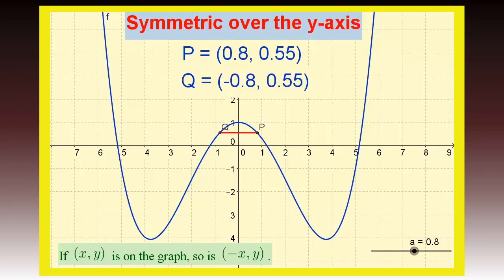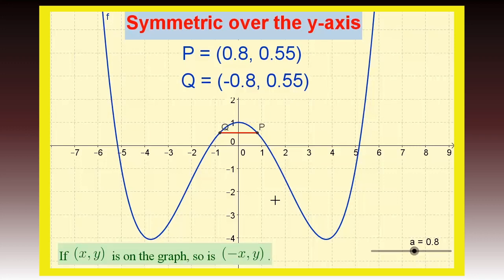Let's take a look at a graph that is symmetric over the y-axis. What it means to be symmetric over the y-axis is that if you have a point x comma y on the graph, then so is the point negative x comma y. In other words, they're going to have the same y value — the same height — but they're going to be on opposite sides of the y-axis.